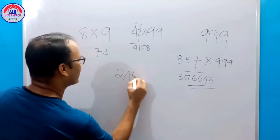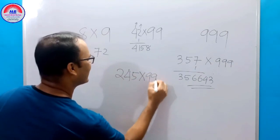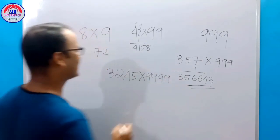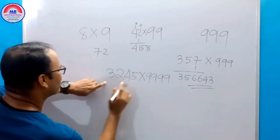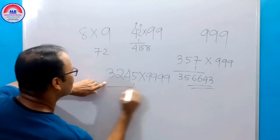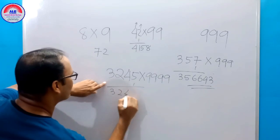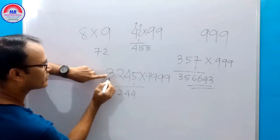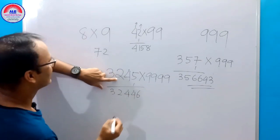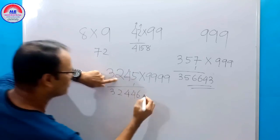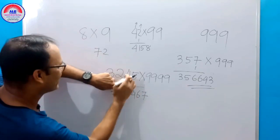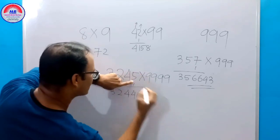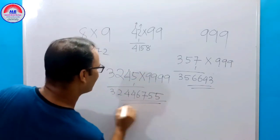Another one: 3245 into 9999. Subtract 1 to get 3244. Then subtract each digit from 9: 9 minus 3 is 6, 9 minus 2 is 7, 9 minus 4 is 5. Then unit digit from 10: 10 minus 5 is 5. That is the answer: 32446755.